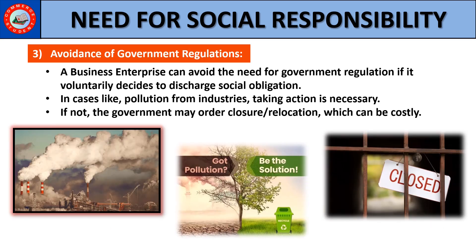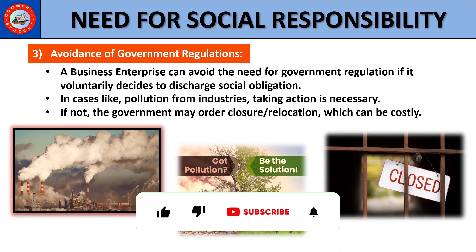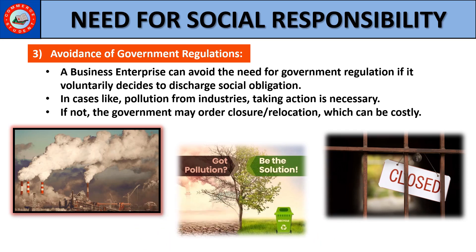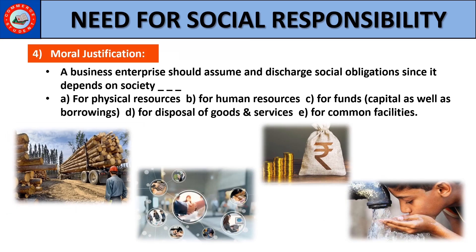Avoidance of government regulations: A business can avoid government regulations by voluntarily fulfilling social obligations. For instance, in the case of manufacturing industries causing pollution, taking proactive steps to prevent pollution are crucial to subside government and legal enforcements. If business fails to do so, it may result in government orders for the closure or relocation of business, which will incur significant expenses.